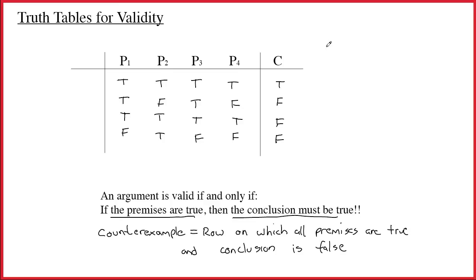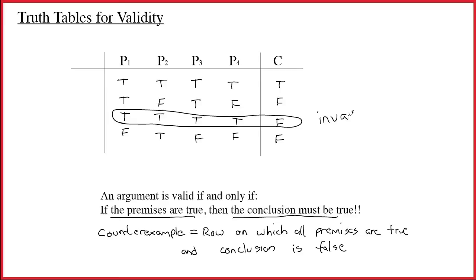Let's look at another example with four premises and a conclusion where the table has been constructed. On the first row all premises are true and the conclusion is true — that doesn't interest us. But on the third row all premises are true and the conclusion is false. That's a counterexample, so the argument is invalid. If you find a counterexample, the argument is invalid every single time. If you don't find one, the argument is valid.